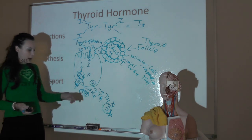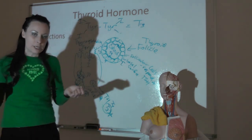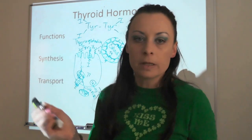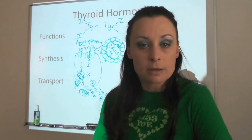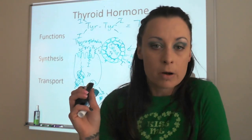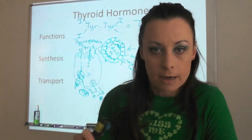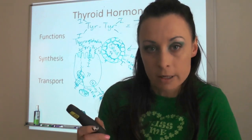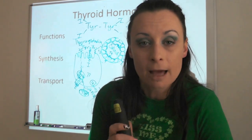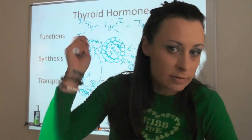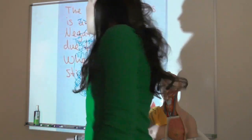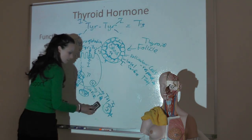Thyroid hormone transport is an exception to the rule about protein/peptide vs. steroid solubility. Most proteins and peptides are water-soluble and don't require a transport protein, but thyroid hormone is amino acid-derived with iodines attached, which changes its solubility. Thyroid hormone requires a transport protein called thyroid binding globulin. When released from the thyroid it binds to thyroid binding globulin, which carries it to target tissues, where deiodinases kick off the fourth iodine and it increases metabolism.